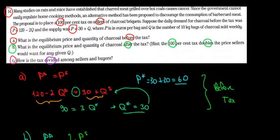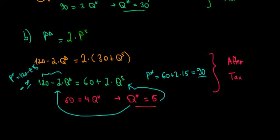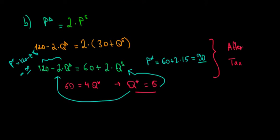Let's have a look at part C in this video. How is the tax divided among the sellers and the buyers? How does the tax affect both sides of the market? Recall that we had a price and quantity before the tax and after the tax. To understand how much the tax affects either side, it's wise to look at it on the graph. Let's draw a graph here below.